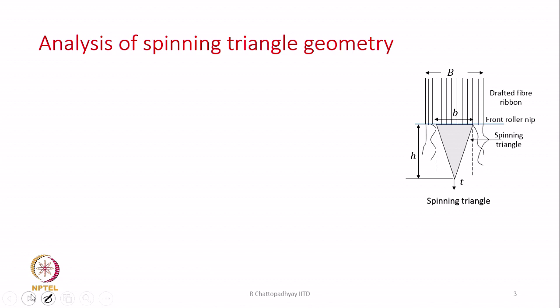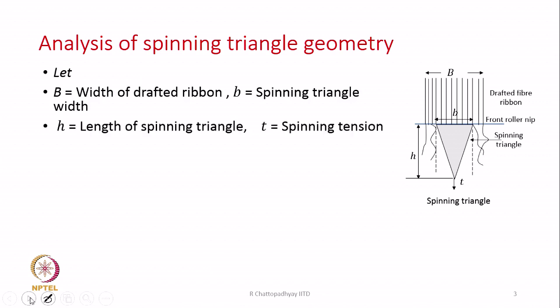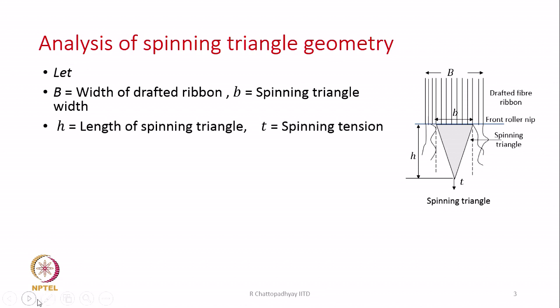Now we will have a brief discussion on the spinning triangle geometry. A schematic view of the spinning triangle is given here. B is the width of the drafted ribbon, and small b is the spinning triangle width — there is a difference between capital B and small b. Small b represents those fibers which are actually participating in yarn formation. The fibers on the edges are likely to be floating fibers. H is the height of the spinning triangle, and t is the spinning tension.